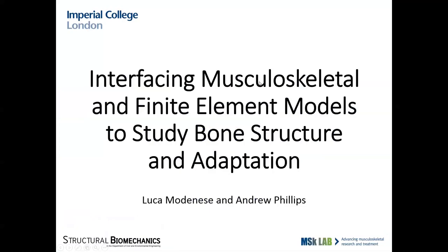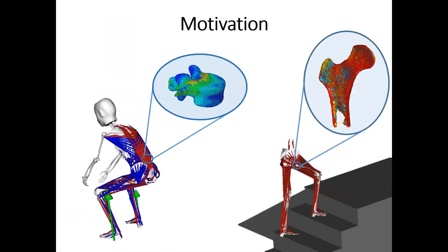Thank you, Jen, for the introduction. I'm Luca Modanese from Imperial College, and I'm here with Andrew Phillips to show you some of the methodologies that we developed to interface musculoskeletal and finite element models. The reason why we developed this is because we wanted to enable the use of musculoskeletal simulation results to set up further analysis at the tissue level — for instance, computing the loads on a lumbar vertebra during a lift task, or evaluating the effect on bone structure of a specific activity like stair climbing.